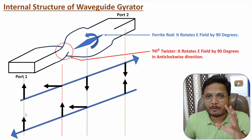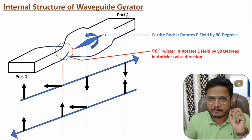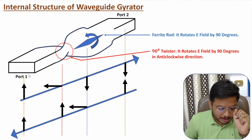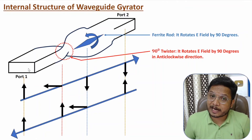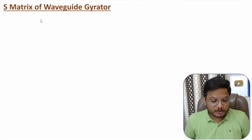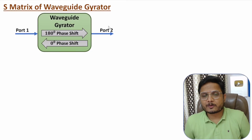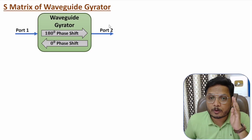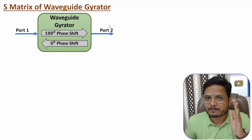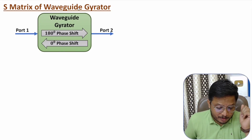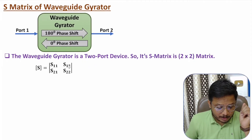Working is based on phase shift: input at port 1 gives 180-degree phase shift at output of port 2, and input at port 2 gives zero-degree phase shift at port 1. Based on this working, I will derive the scattering parameters. The waveguide gyrator is a two-port device with port 1 and port 2, so the scattering matrix is a 2×2 matrix with parameters S11, S12, S21, and S22.